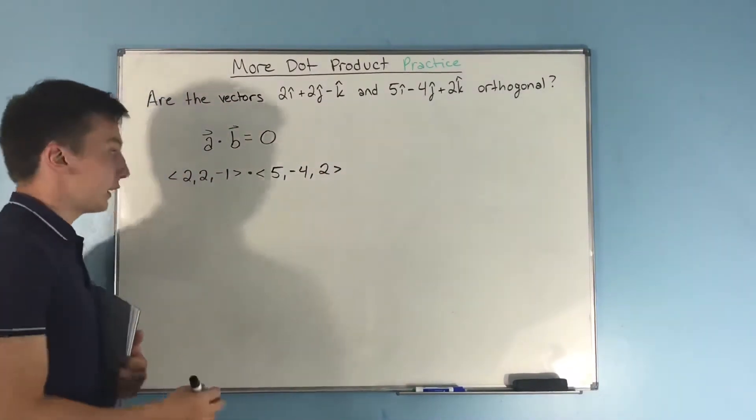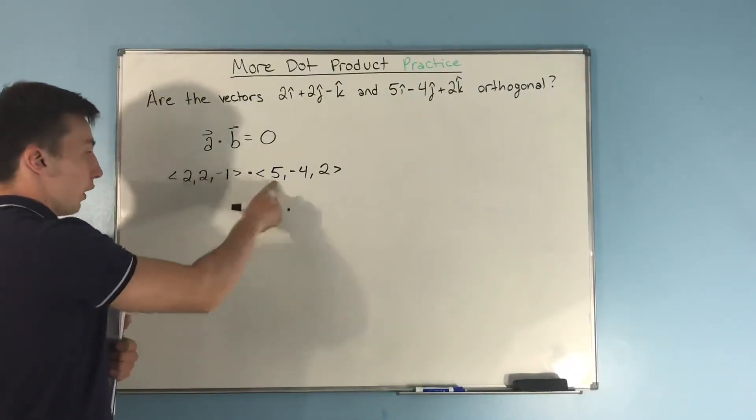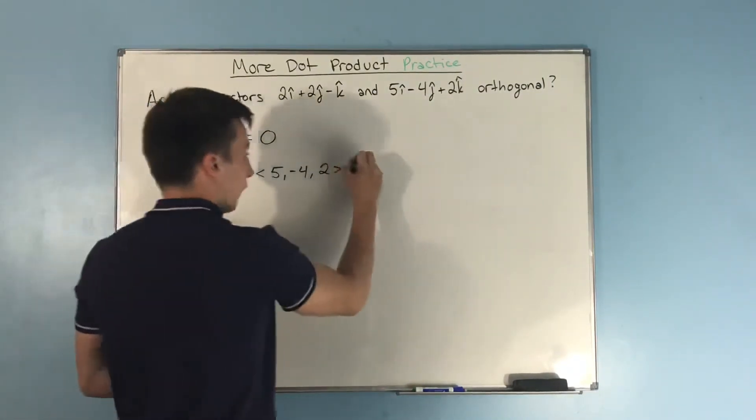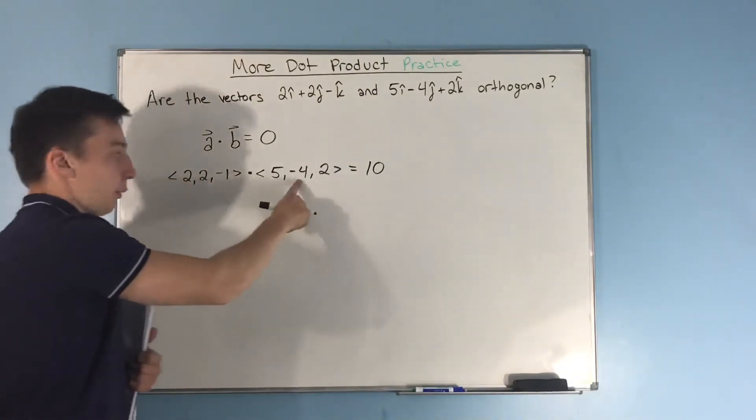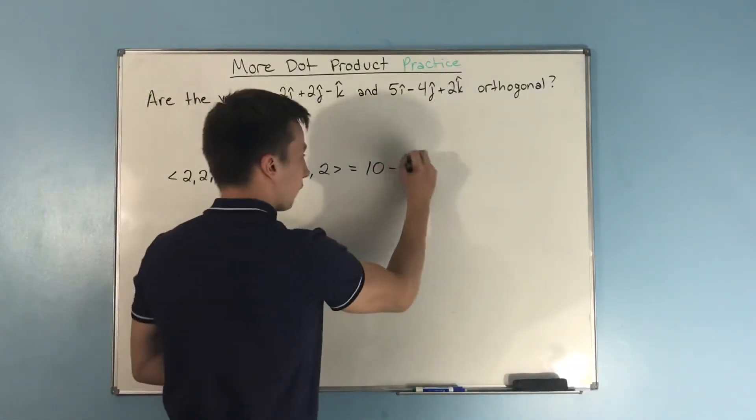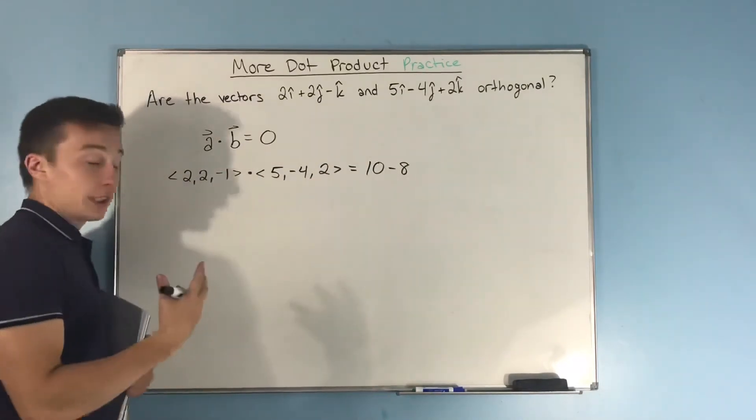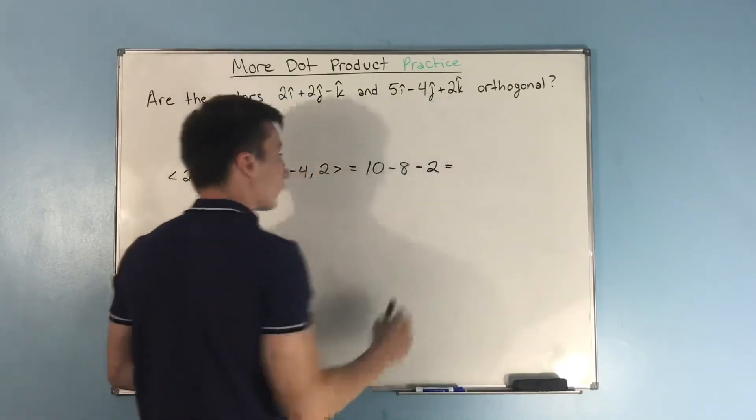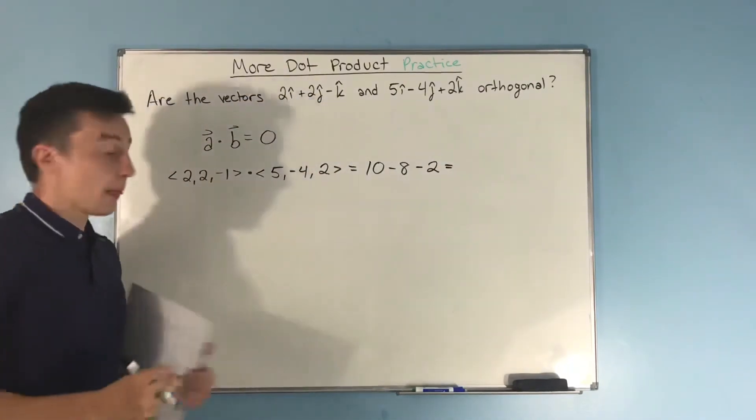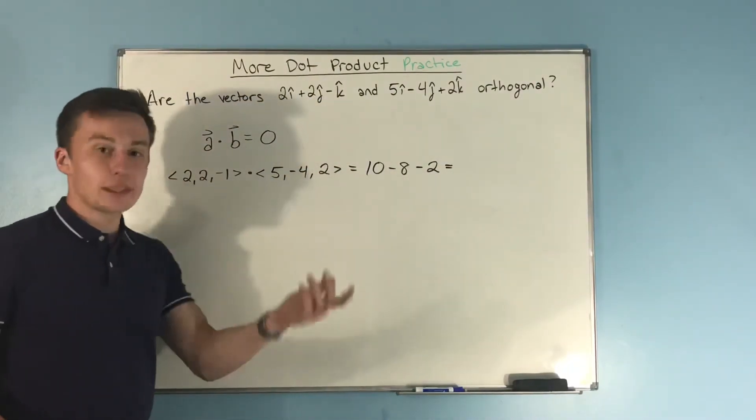So let's dot these. We have 2 times 5, which will give us 10. We have 2 times negative 4, which gives us negative 8. And we have negative 1 times 2, which gives us negative 2. So 10 minus 8 minus 2, that's zero.